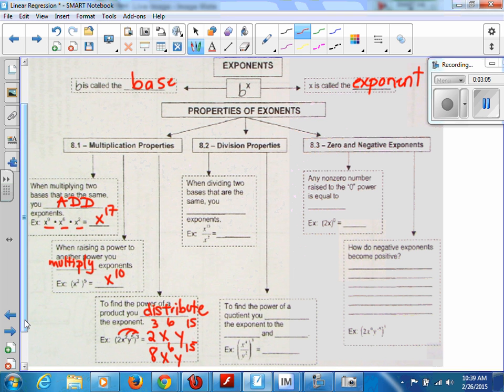All right, let's go to the middle. Division properties. When dividing two bases that are the same, you blank the exponents. The bases are the same. What do we do? We're going to subtract the exponents. Very good. So you really have, what's 13 minus 2? 11. So you're left with x to the power of 11.